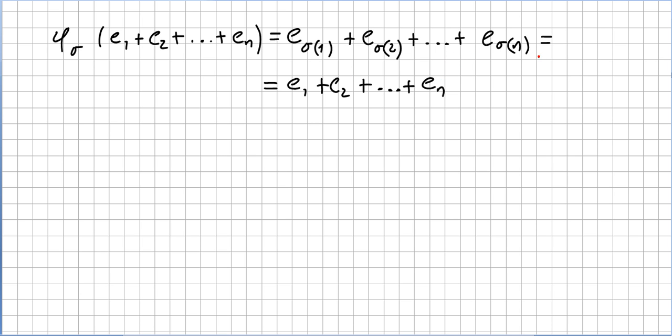This last equality: do not forget that σ is a permutation and addition is commutative. So this sum E1 + ... + En is invariant under all φ of σ.